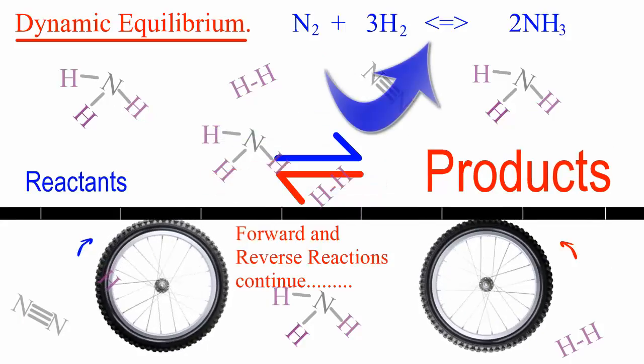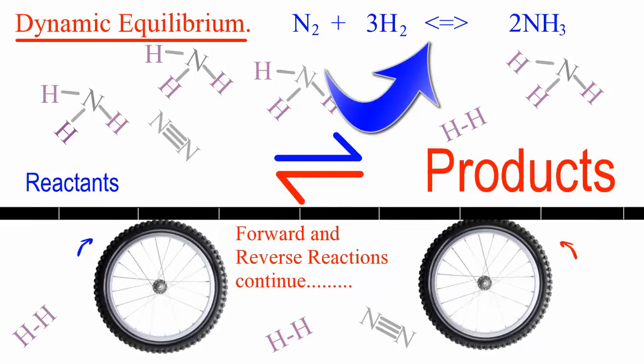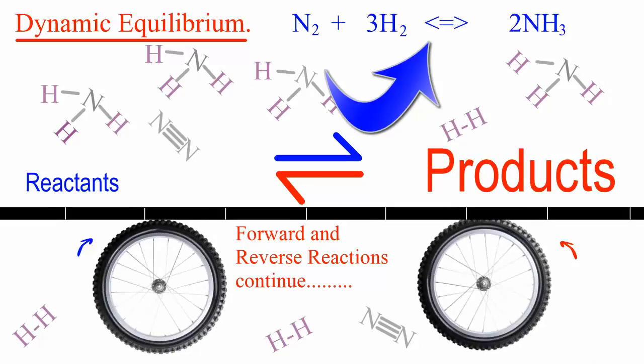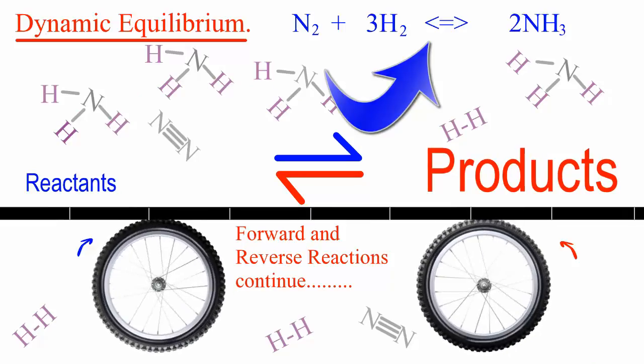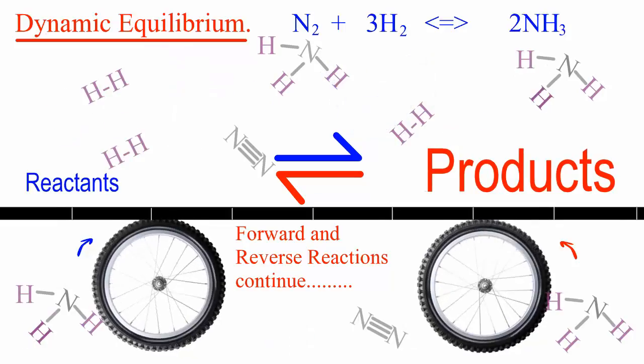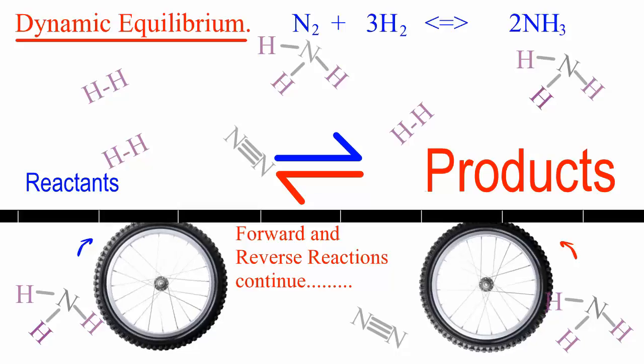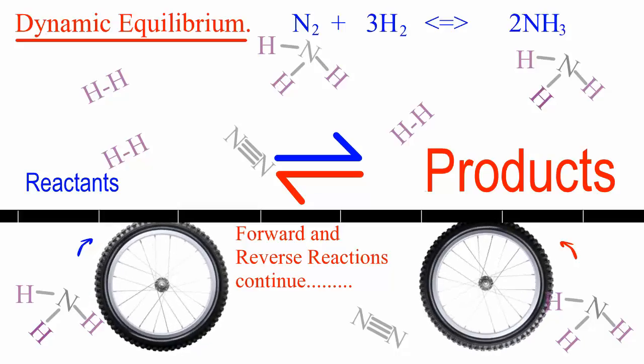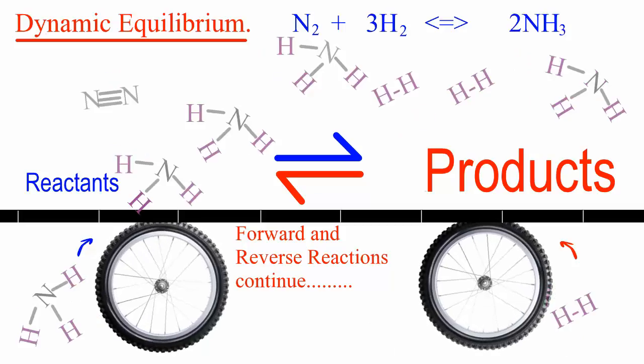The so-called Haber process dynamic equilibrium is represented there in the background, where nitrogen and hydrogen gases react to form ammonia gas. Here you see the dynamic equilibrium has been reached. At this point, the rate at which nitrogen and hydrogen react to form ammonia will be exactly matched by the rate at which ammonia decomposes to produce nitrogen and hydrogen.